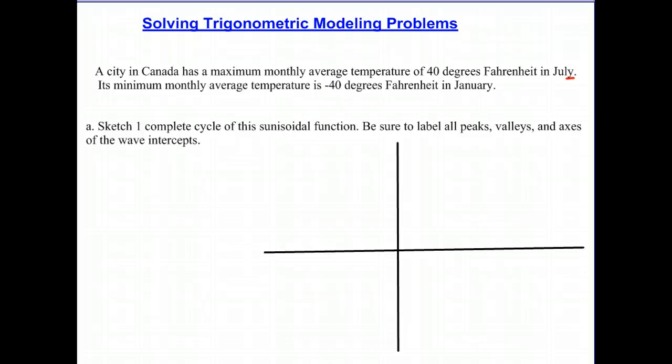A city in Canada has a maximum monthly average temperature of 40 degrees Fahrenheit in July. Its minimum monthly average temperature is negative 40 degrees Fahrenheit in January. We're given a maximum value of 40 degrees in July and a minimum value of negative 40 degrees in January.